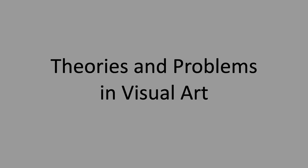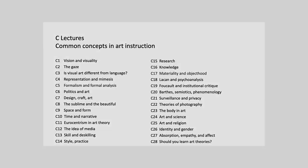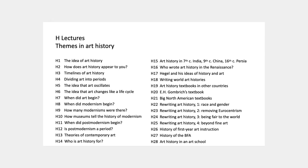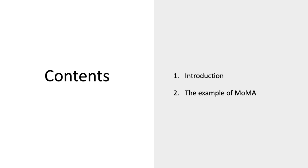Welcome to Theories and Problems in Visual Art. This is Lecture 10 in the History Series on the subject, How Museums Tell the History of Modernism. Because stories of modern art and postmodern art are not told only in books, but also by galleries and the way that they're arranged. So I have a couple of slides to introduce that.